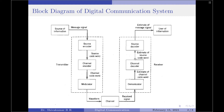The second coding technique is called convolutional coding. Here, the information bearing message stream is encoded in a continuous fashion by continuously interleaving information bits and the error control bits. The channel decoder recovers the information bearing bits from the coded binary stream. Error detection and possible error correction is also performed by the channel decoder.